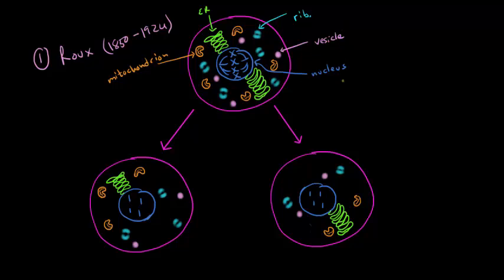Rue concluded that because the material in the nucleus was divided in a very orderly and even fashion, that that must be the genetic material.